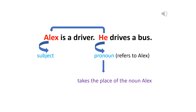In this sentence, it is clear that Alex is the subject in the first sentence. In 'He drives a bus,' 'he' is the pronoun — it refers to Alex. So the pronoun 'he' takes the place of the noun Alex.